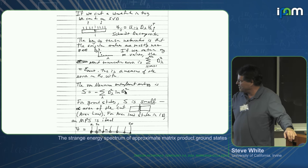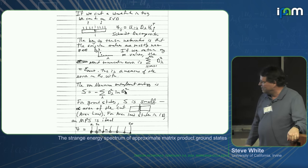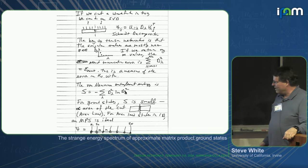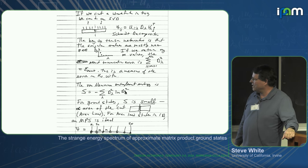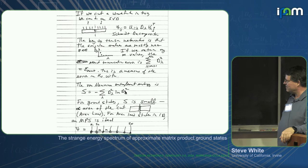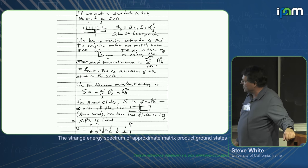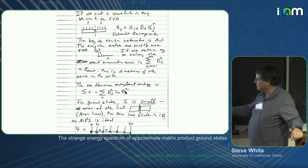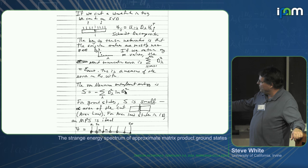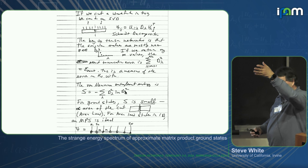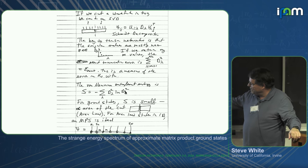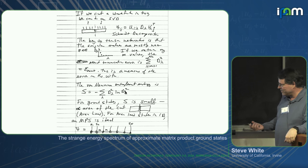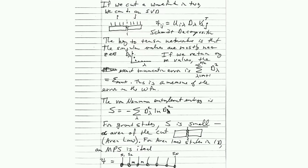The von Neumann entanglement entropy is given by the standard information theory formula for the singular values. For ground states, S is small, and it's governed by what's called the area law, which has been proved in certain cases. The area law corresponds to thinking of a three-dimensional system: cut it in two down the middle, and the area of that cut gives the dominant behavior of the entanglement entropy for ground states. There are often logarithmic corrections, but the dominant portion is given by this area law.